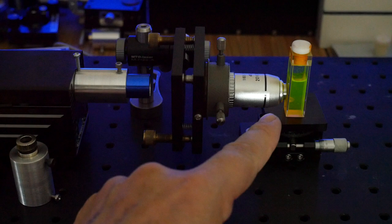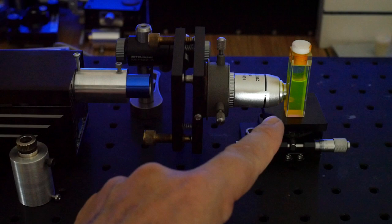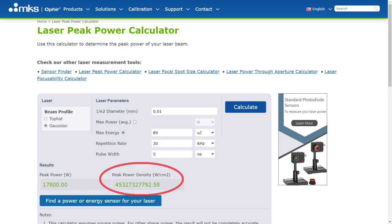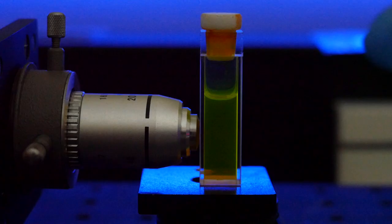In front of the laser I have a microscope objective fitted into a homemade mount. This focuses the light down into a very very tight spot. The extremely tight spot results in a ludicrously high light intensity on the order of gigawatts per square centimeter.